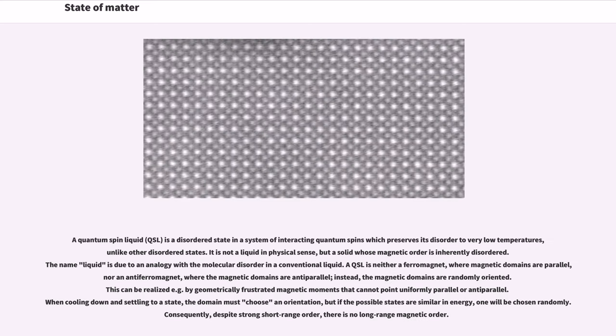A quantum spin liquid, QSL, is a disordered state in a system of interacting quantum spins which preserves its disorder to very low temperatures, unlike other disordered states. It is not a liquid in physical sense, but a solid whose magnetic order is inherently disordered. The name liquid is due to an analogy with the molecular disorder in a conventional liquid. A QSL is neither a ferromagnet, where magnetic domains are parallel, nor an anti-ferromagnet, where the magnetic domains are anti-parallel. Instead, the magnetic domains are randomly oriented. This can be realized for example by geometrically frustrated magnetic moments that cannot point uniformly parallel or anti-parallel. When cooling down and settling to a state, the domain must choose an orientation, but if the possible states are similar in energy, one will be chosen randomly. Consequently, despite strong short-range order, there is no long-range magnetic order.